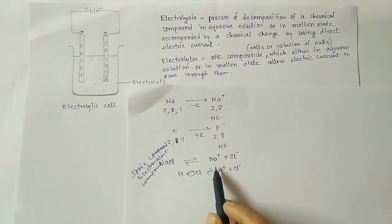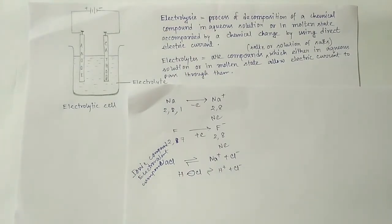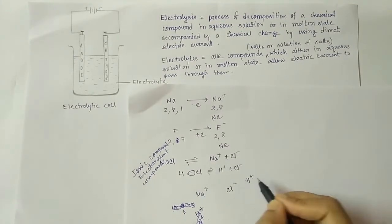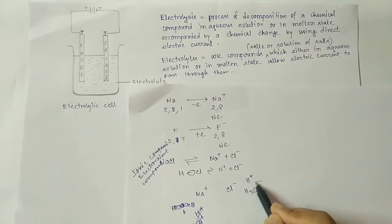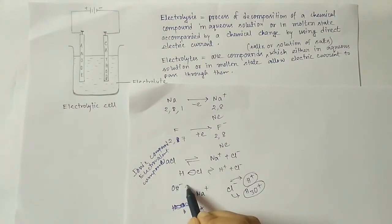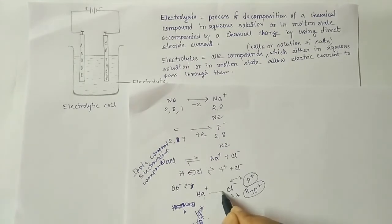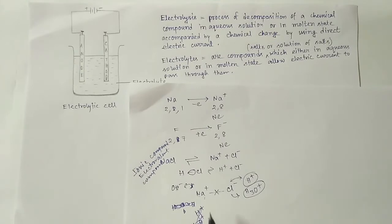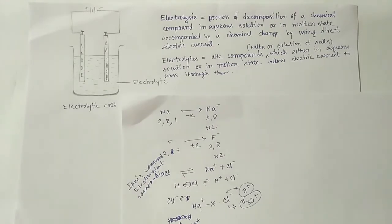When Na+ and Cl- are in water, the H+ or H3O+ positive ions of the water molecule come closer to the chloride ion and pull it towards themselves. Similarly, the negative hydroxyl ion comes in contact with Na+ and pulls it towards itself. This makes the bond vulnerable, the bond breaks, and sodium plus and chloride ions get separated in water, providing free charges Na+ and Cl-.